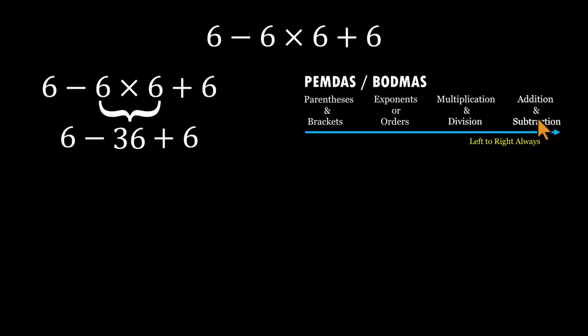Subtraction and addition are equal in rank, so we go left to right. 6 minus 36 equals negative 30. Then negative 30 plus 6 equals negative 24. And that's the correct answer. Negative 24.